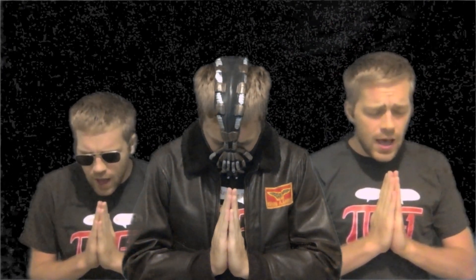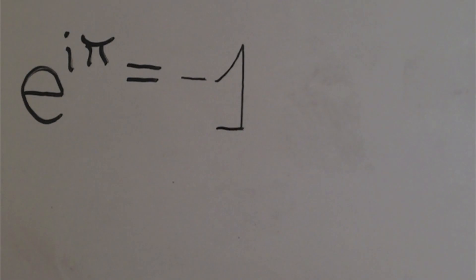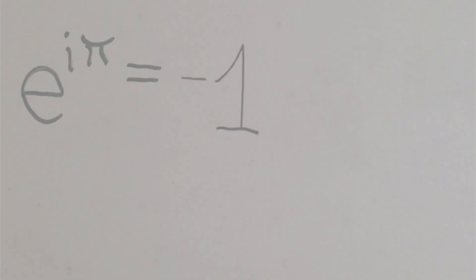E to the i pi is equal to negative 1, man, that is crazy. This equation can't be outdone. E to the i pi is equal to negative 1.